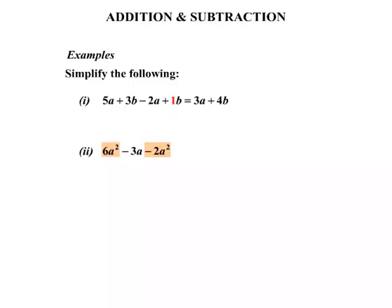So we have 6a squared minus 2a squared. Well so far that is 4a squared. But then we have this minus 3a. There's no other singular a terms to add, but we need to certainly write that down, minus 3a there. So our answer there is 4a squared minus 3a.